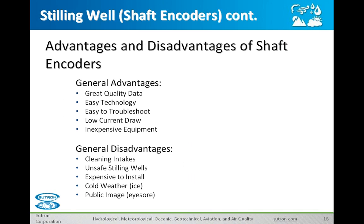Some general advantages and disadvantages of using a shaft encoder: The advantages are you get great data — they're very accurate, especially if your float never gets hung up in the well. It's easy, simple technology, which makes it easy to troubleshoot. Everything works off the shaft turning, making it really nice to diagnose. The equipment itself draws very little current, so you don't have to worry too much about power with the sensor itself, and the equipment can be very inexpensive.